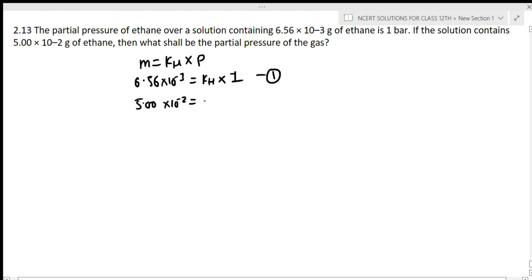Here kH value we don't know, and partial pressure we have to find. So we take the kH terms and substitute the given values from the first situation. 6.56 × 10^-3 equals kH times 1, this is equation one. The kH value: 5 × 10^-2 upon P.